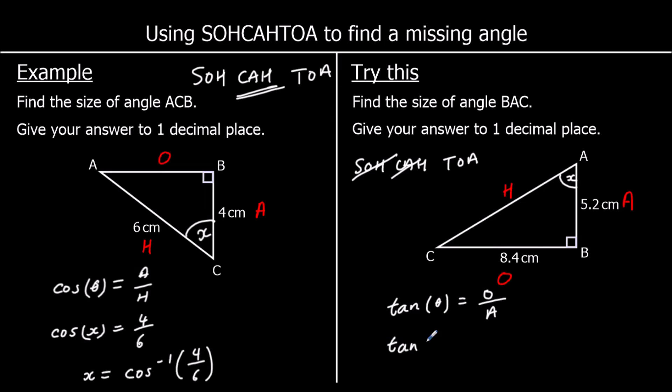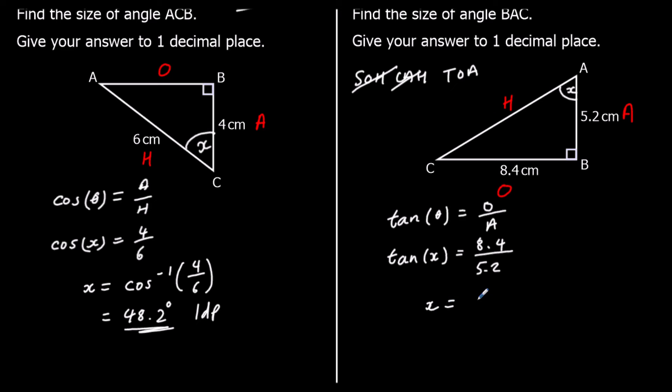In this question that means tan x equals 8.4 over 5.2. To get x by itself — to get x away from tan — we use shift tan. So x equals shift tan of 8.4 over 5.2. Typing that in the calculator: shift tan 8.4 over 5.2. And to one decimal place, that's 58.2 degrees.